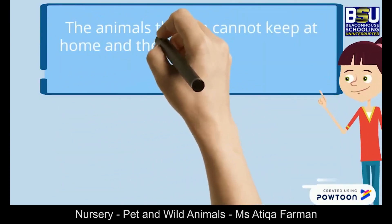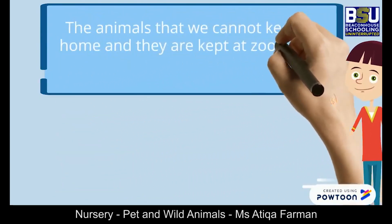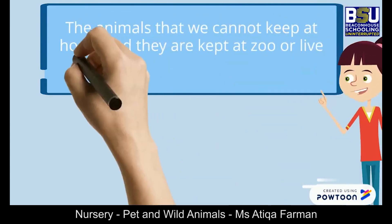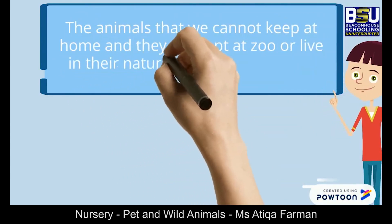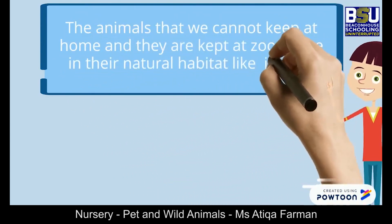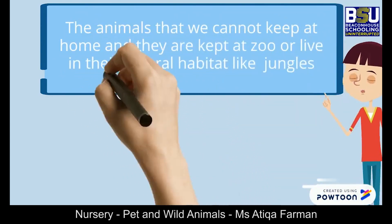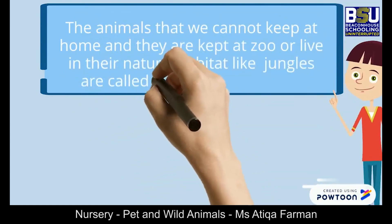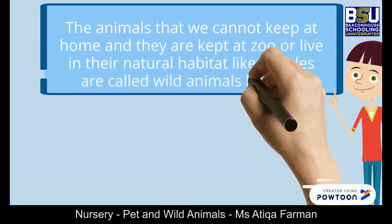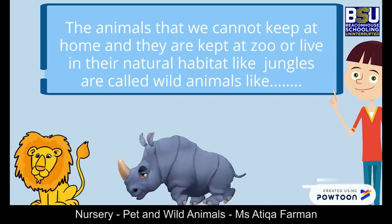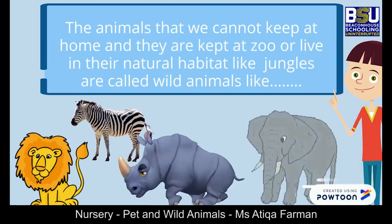The animals that we cannot keep at home, and they are kept at a zoo or live in their natural habitat like jungles, are called wild animals. For example, rhino, lion, zebra, and elephant.